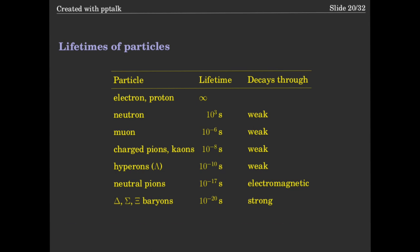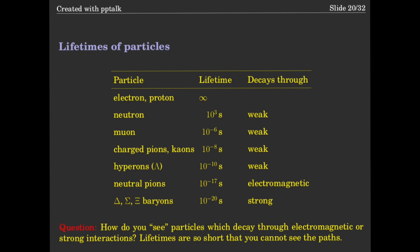How can you measure lifetimes of 10 to the minus 20 seconds, or even know about objects which live so short? If something lives for 10 to the minus 20 seconds, even the fastest object moving at the speed of light will travel only 10 to the minus 10 centimeters — less than an atom — so you cannot put a detector that close. There are other methods.